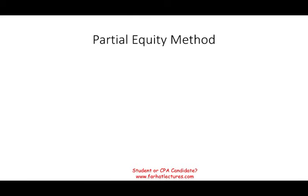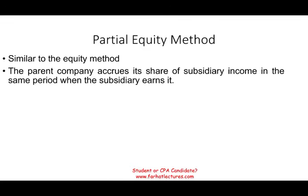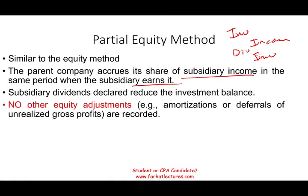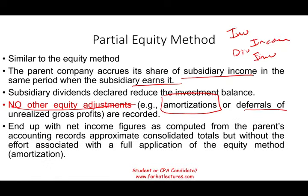The partial equity method is similar to the equity method. Every time the subsidiary earns income, we accrue it — debit investment, credit income from subsidiary. Every time they declare a dividend, we debit dividends and credit investment. However, we do not make the other two adjustments — excess amortization and the deferral of unrealized profit. So we end up with a net income figure approximating the consolidated total, but without the full effort of applying the equity method. The consolidated totals for both companies will be the same; what differs is the consolidating entries.